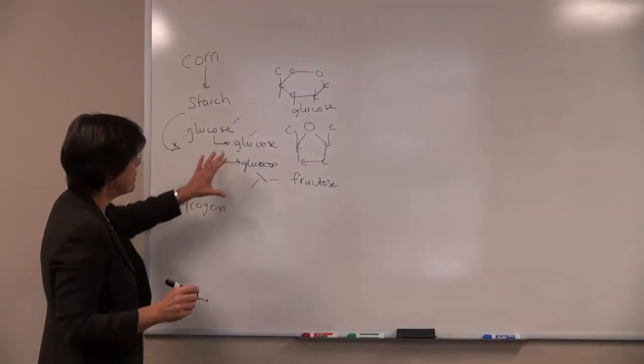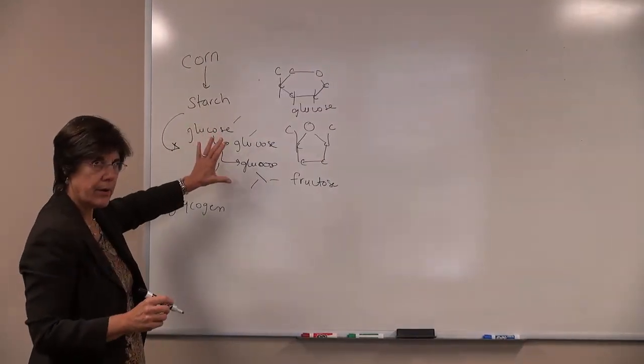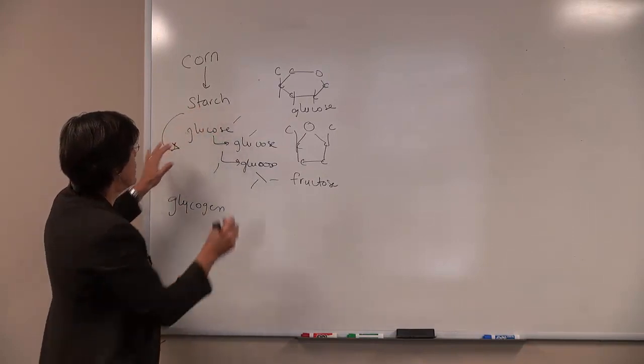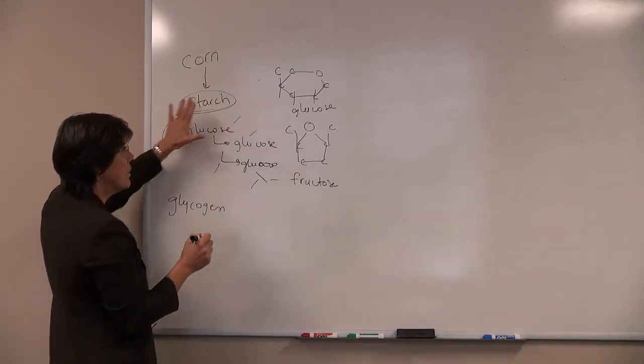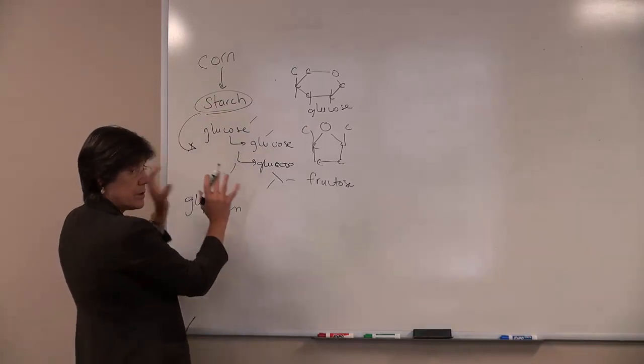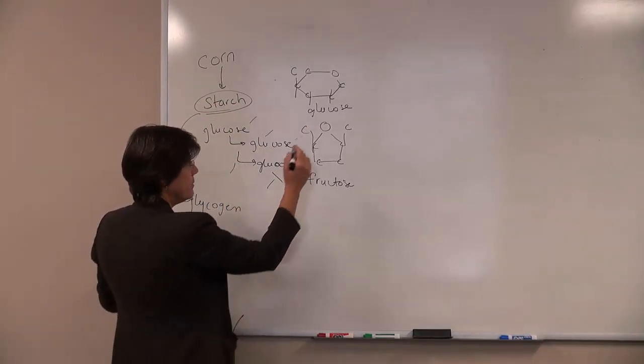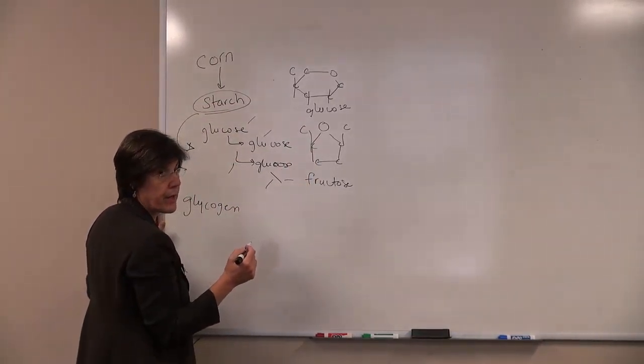So by converting some of the glucose and breaking it apart in the chain, the starch that we started out with from the corn becomes a mixture - it doesn't have just glucose, it has a mixture of glucose and fructose together.